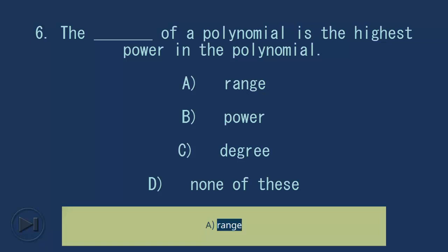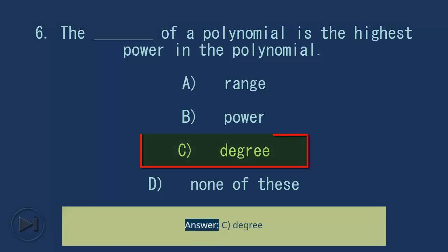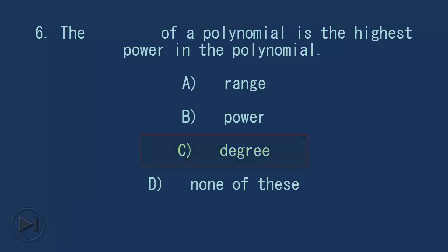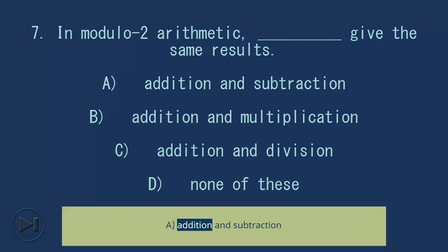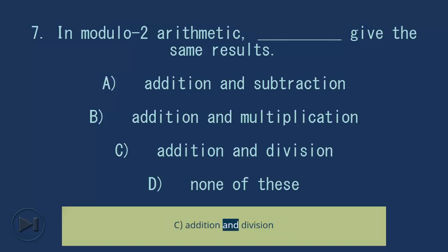Question 6: The blank of a polynomial is the highest power in the polynomial. A) range, B) power, C) degree, D) none of these. Answer: C, degree. Question 7: In modulo 2 arithmetic, blank give the same results. A) addition and subtraction, B) addition and multiplication, C) addition and division, D) none of these.